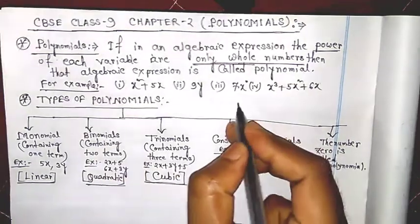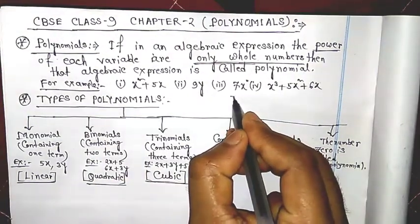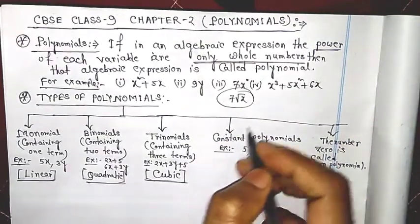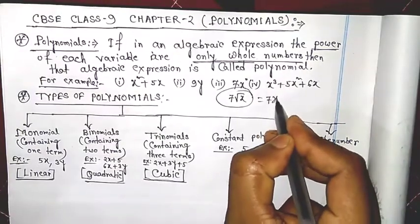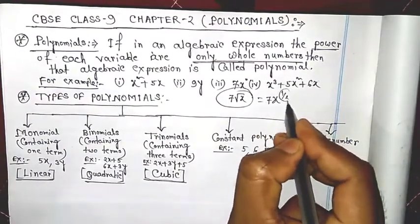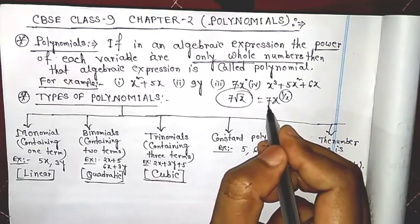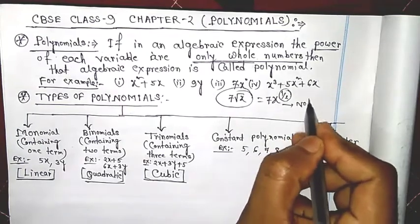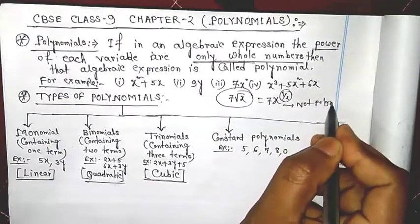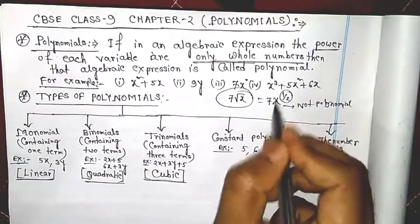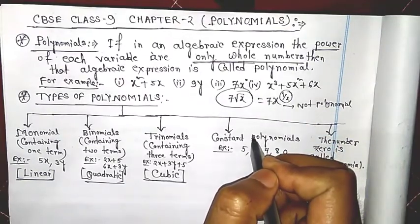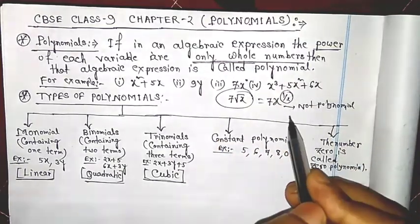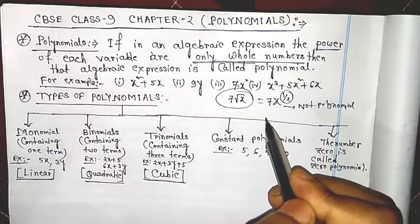One question: is 7√x a polynomial? No, because 7√x means 7 into x to the power 1/2, but 1/2 is not a whole number. So 7√x is not a polynomial because the power is a fraction, not a whole number. You must remember: power must be whole numbers, otherwise it is not a polynomial.